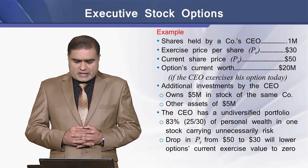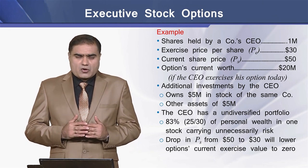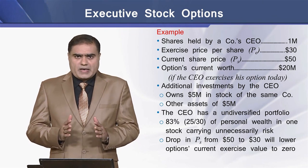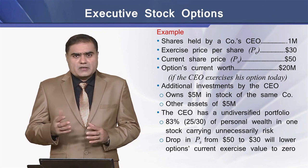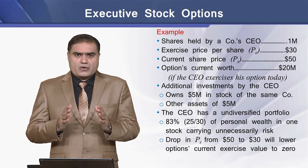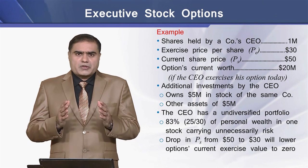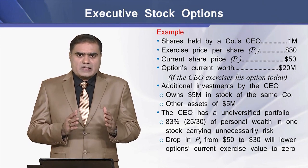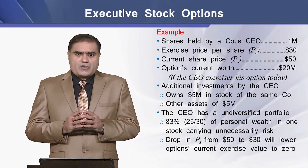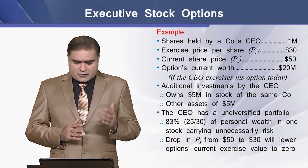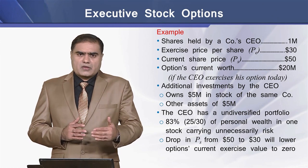Additional information about this CEO says that he holds $5 million in the stock of this company and $5 million in other assets. So the portfolio of this CEO is equal to $30 million, and out of $30 million, $25 million is invested in a single company. His personal portfolio is not well diversified because he has put 83% of his wealth in a single company's stock.